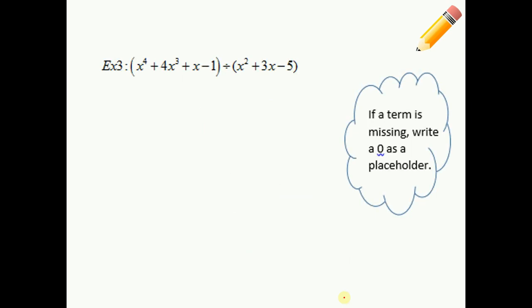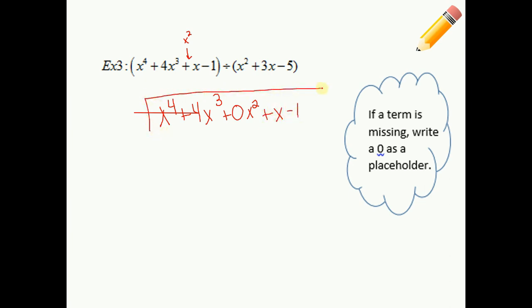Sometimes you're going to be missing terms on either side — in the divisor or the dividend. What you're going to want to make sure is to put a 0 as a placeholder. If I notice here, they were missing the x squared term — it's gone. So we're going to have to put a 0 in front of it. Let's go ahead and write out our problem, putting a 0x squared as that placeholder. We're going to divide by x squared plus 3x minus 5.